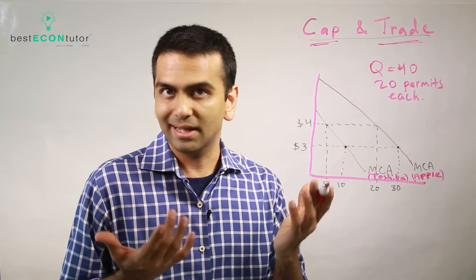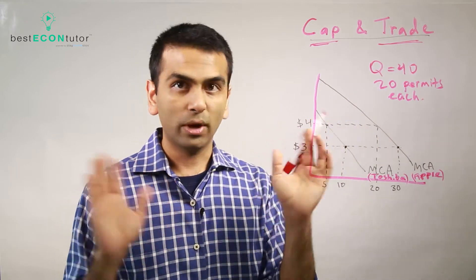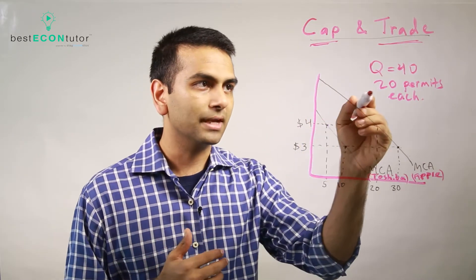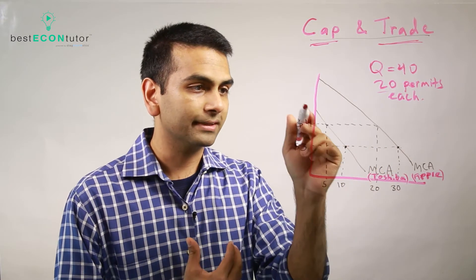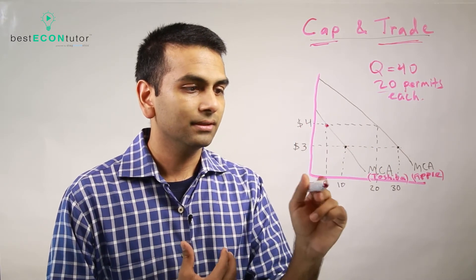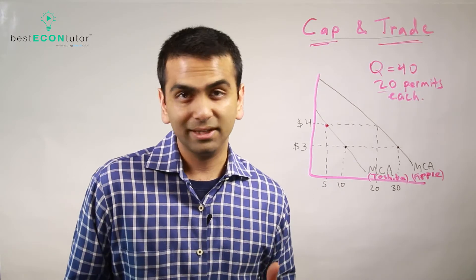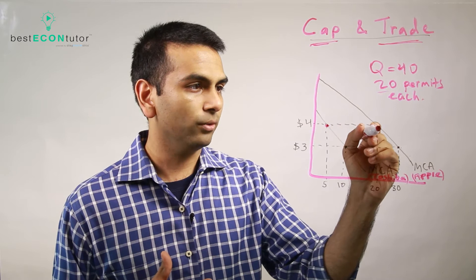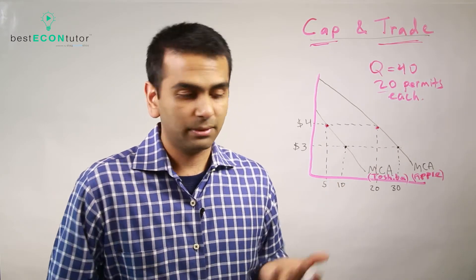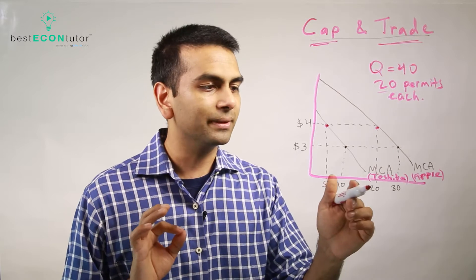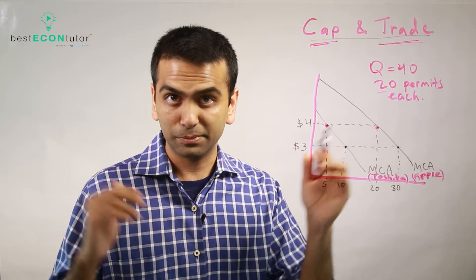The question is: what's the equilibrium price of a permit, and who will buy how many permits from whom? The way to solve this is to guess and check the price — usually there aren't many options, so it's manageable. Let's say the price of a permit is $4. Both companies got 20 permits each. At $4, Toshiba wants to pollute only 5 units, so they'd sell 15 permits. At $4, Apple wants to pollute 20 units, so they don't want to trade — they'll just use their 20 permits. That means only 25 units would be polluted, which is not an equilibrium since there are 40 permits in circulation.